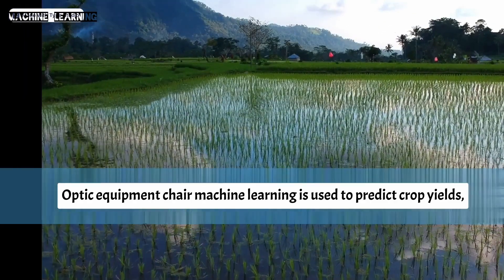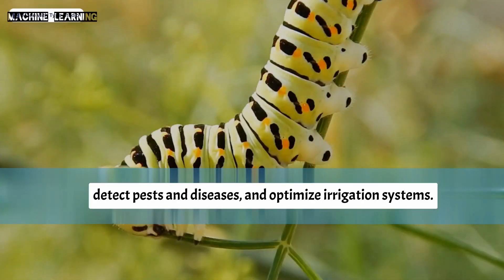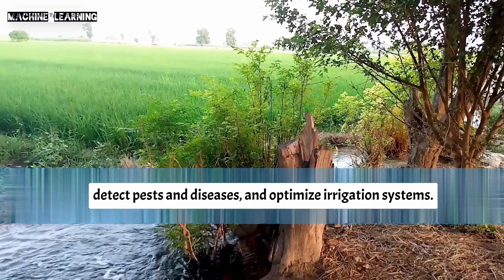In agriculture, machine learning is used to predict crop yields, detect pests and diseases, and optimize irrigation systems.